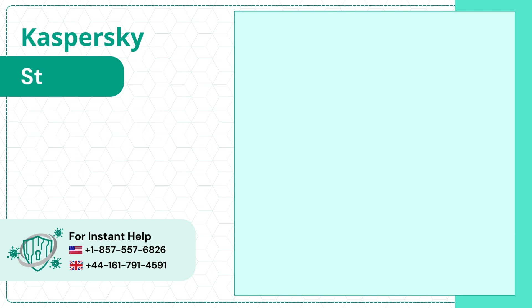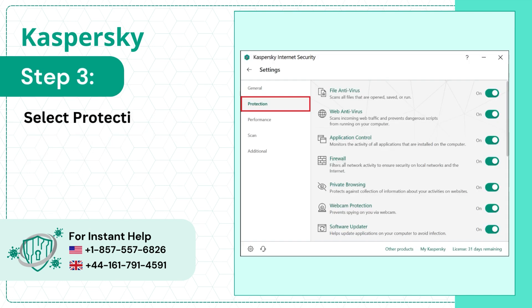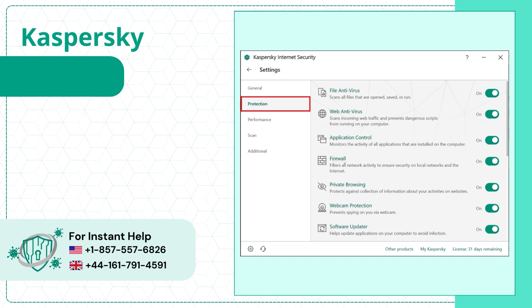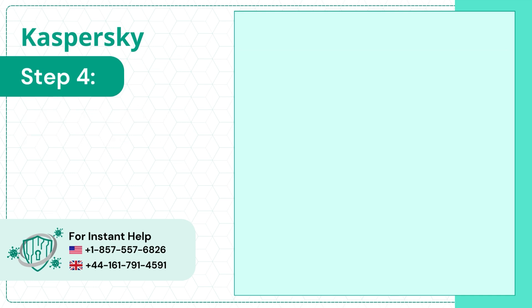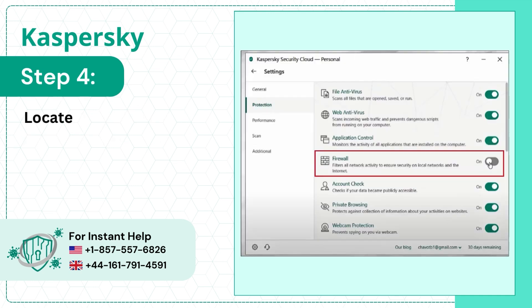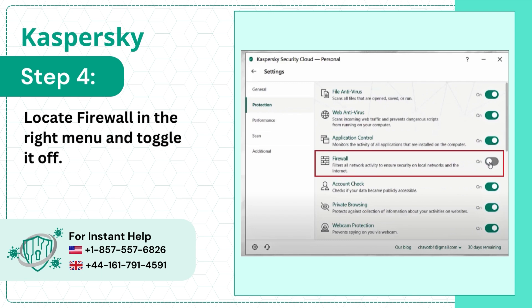Step 3: Select Protection on the left menu. Step 4: Locate Firewall in the right menu and toggle it off.